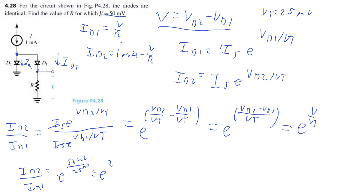Ultimately, we want to solve for R. I can express R with these currents. We'll say ID2 divided by ID1, which is 1 milliamp minus V over R divided by V over R, is equal to E to the power of 2. Let's start solving for R because I already know my value of V is 50 millivolts. Multiply V over R on both sides of the equation. So we get 1 milliamp minus V over R equals V over R times E to the power of 2. Add this V over R to the right side. So we have 1 milliamp equals V over R plus V over R E to the power of 2. Factor out V over R: 1 milliamp equals V over R times 1 plus E to the power of 2.